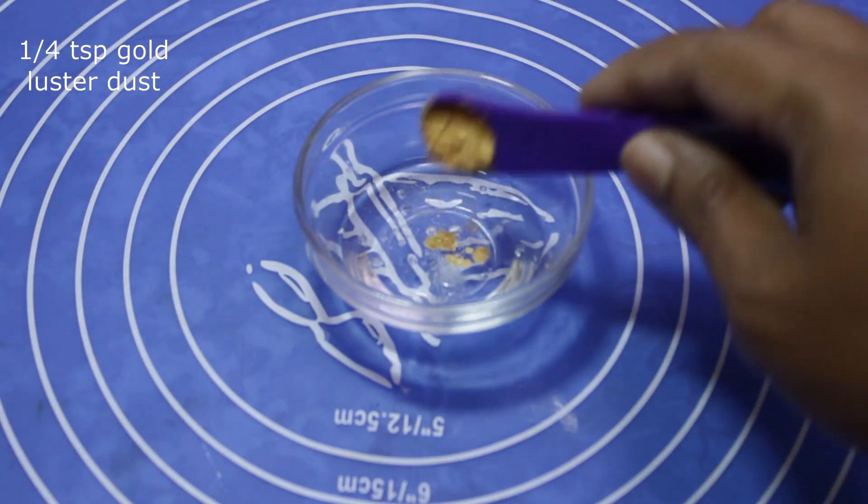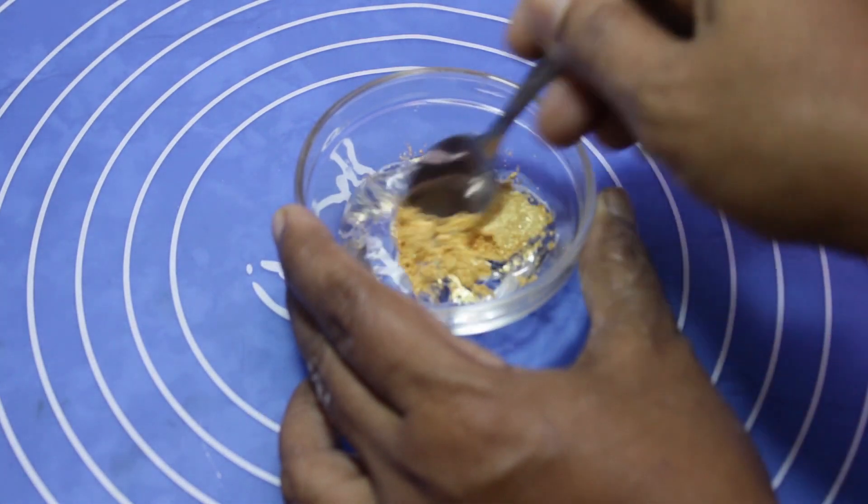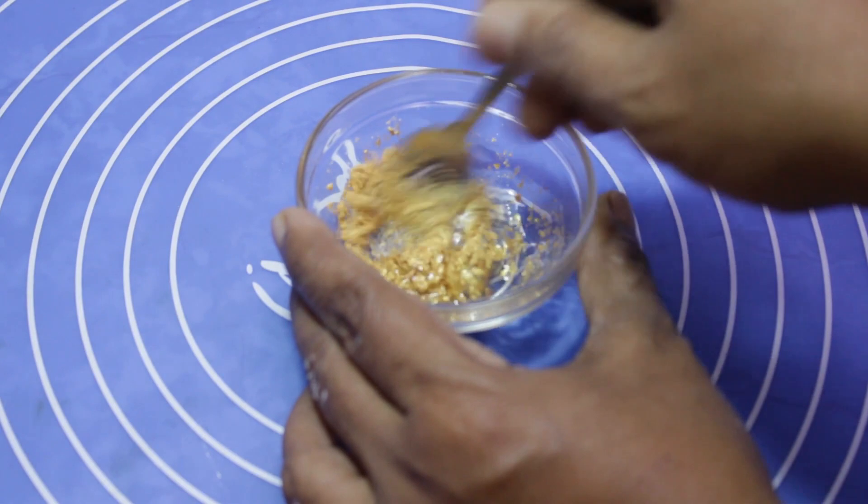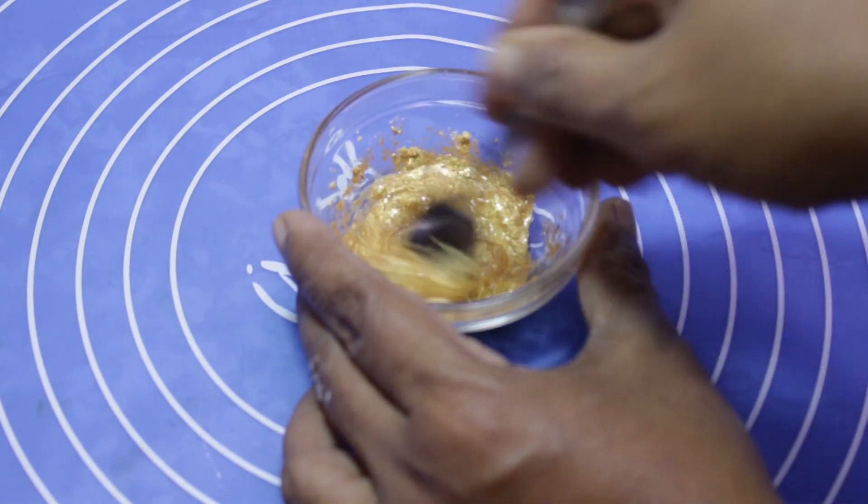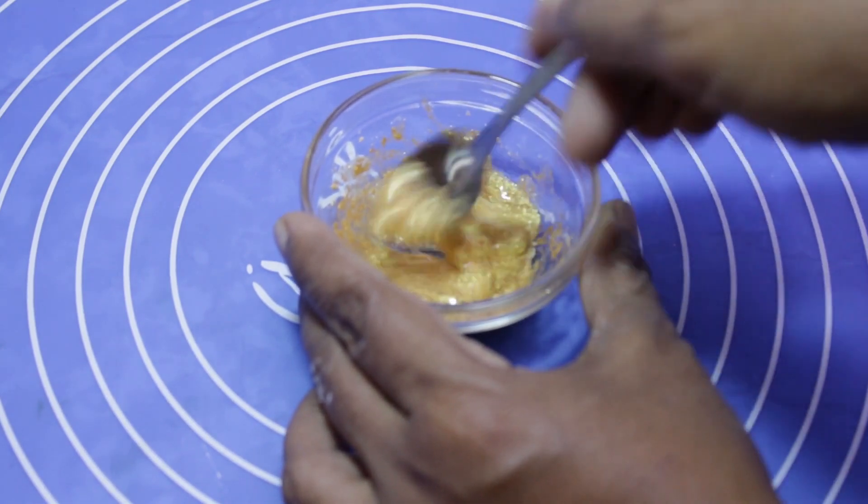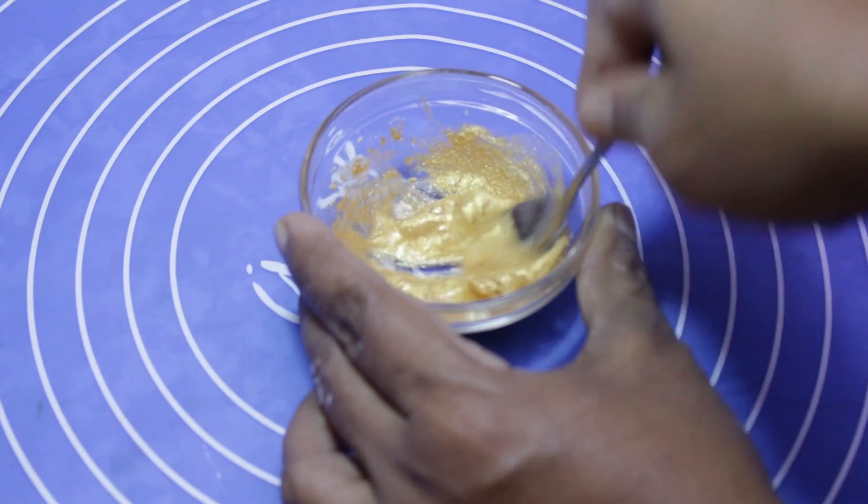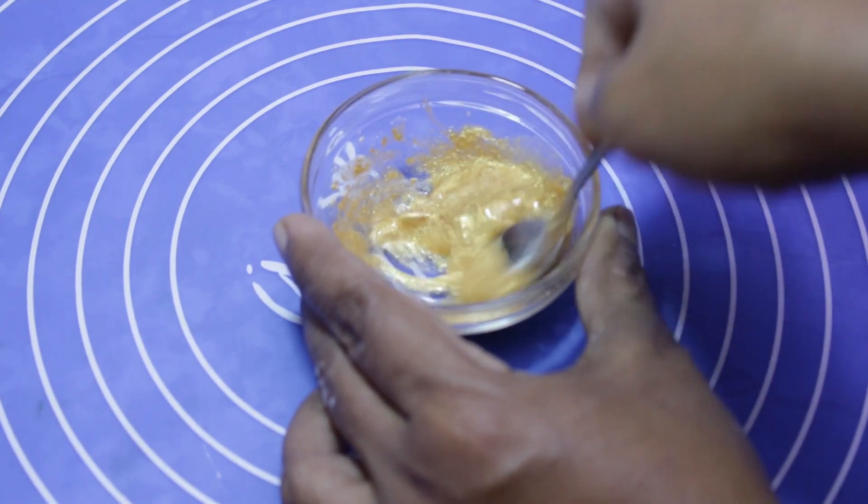One-quarter teaspoon gold. Mix it and make it smooth.